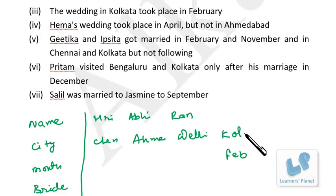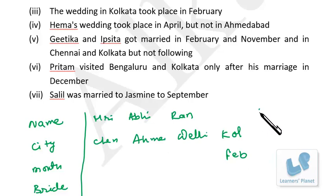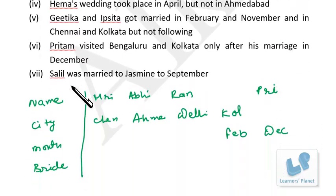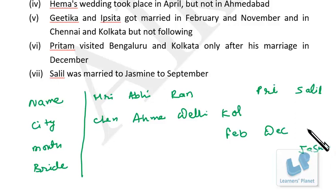Hema's wedding took place in April but not in Ahmedabad. Geetika and Ipshita got married in February and November, in Chennai and Kolkata but not necessarily in that order. Pritam visited Bengaluru and Kolkata only after his marriage in December, so we write Pritam — December. Salil was married to Jasmine in September, so Salil — bride: Jasmine, month: September. With this first pass, we fill up this much data.